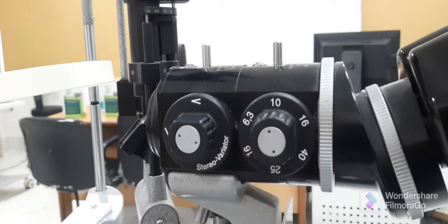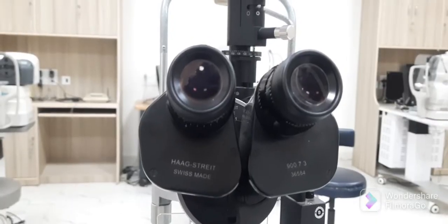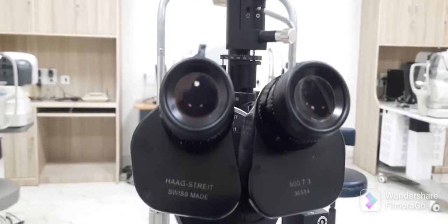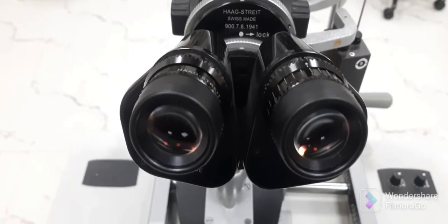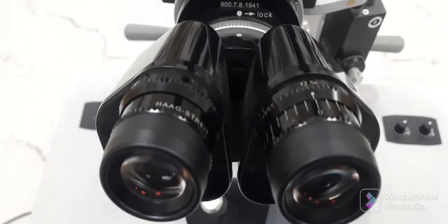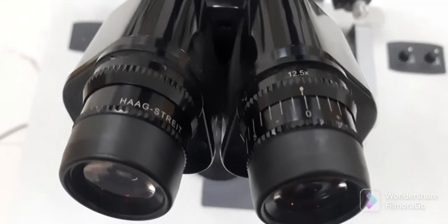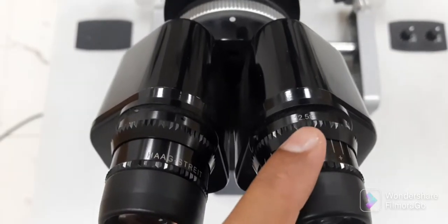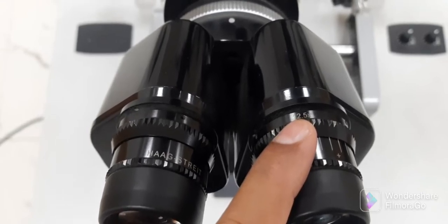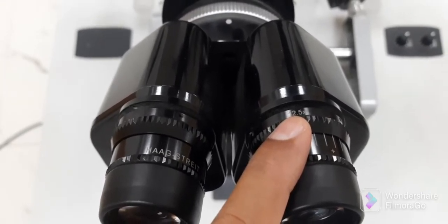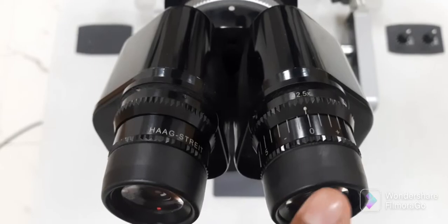Now the next step is to focus both eyepieces through which patient's eye is observed by the examiner. The eyepiece provides 12.5x magnification. These are the two eyepieces - this is the left one and this is the right one.